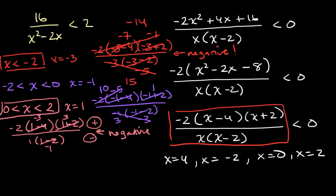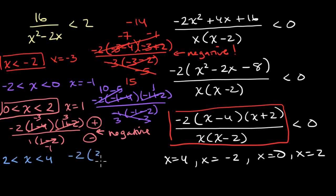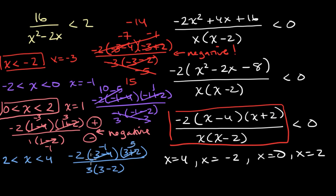We have two more intervals to test. Let's try between two and four using x equals three. We get negative two times (three minus four) times (three plus two), all over three times (three minus two). That's negative two times negative one times positive five, over three times one. The numerator is positive, the denominator is also positive — so the result is positive, not less than zero. This interval is not part of our solution set.